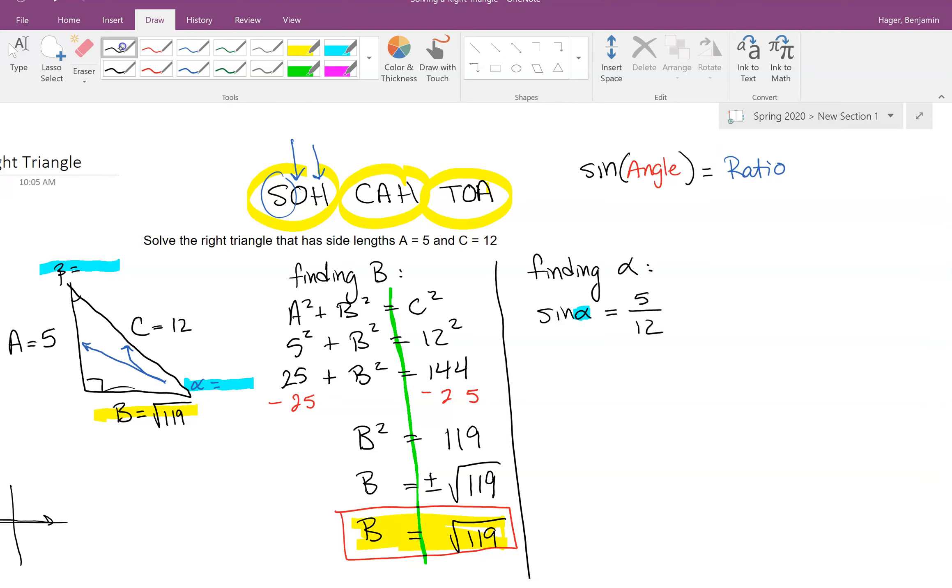Now if you start dealing with sine inverse or arc sine, what you plug in there is the ratio, and what's going to come out is the angle that gives you that ratio. All right, so you can always swap between the two forms depending on what you're looking for. I want to free up that angle and get it outside of the equal sign, so I'm going to switch to inverse notation. So this means that sine inverse of 5/12, well that's equal to my alpha.